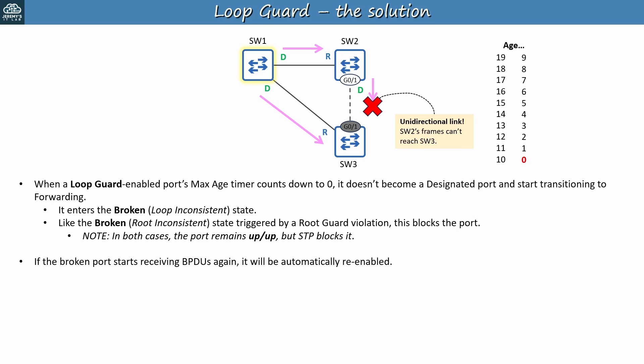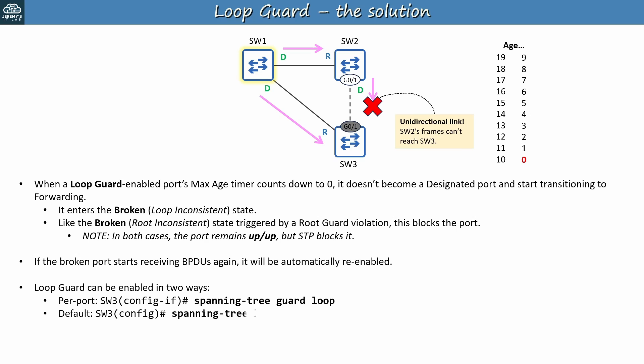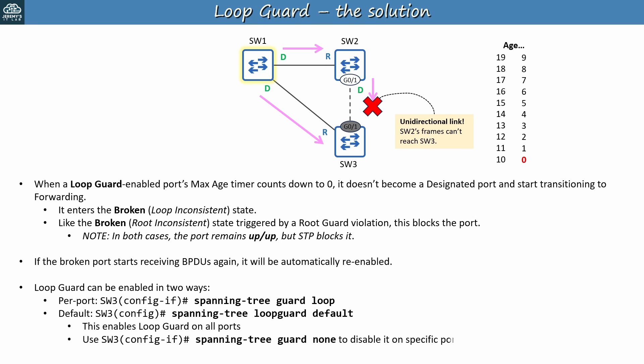Loop Guard can be configured in two ways. The first is per port with 'spanning tree guard loop' in interface config mode. The second is by default in global config mode with 'spanning tree loop guard default' — this enables Loop Guard on all ports. You can then use 'spanning tree guard none' in interface config mode to disable it on specific ports if needed. Loop Guard should typically be activated on any ports that aren't designated — root and non-designated ports — in other words, ports that are supposed to receive BPDUs from designated ports. Then, if they stop receiving BPDUs, Loop Guard will disable them to prevent loops.